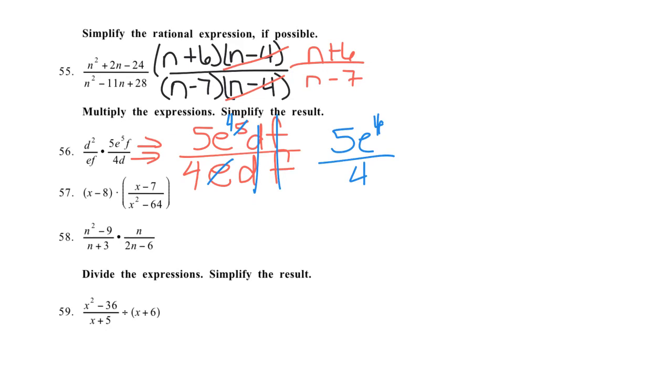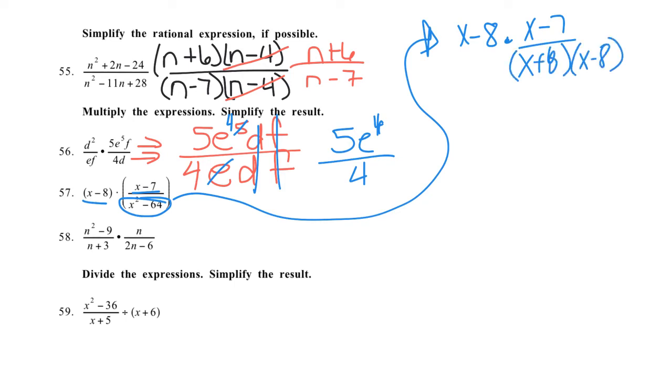Number 57, I can't factor, I can't factor, but I can factor the x squared minus 64. So I'm going to come do this up here: x minus 8 times x minus 7 over x plus 8 times x minus 8. You should recognize the x squared minus 64 is the difference of squares, and the x minus 8s divide out, and we get x minus 7 over x plus 8.